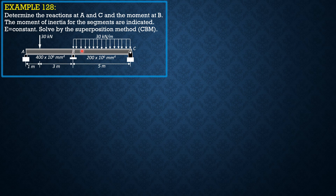We will remove support B so the beam deflects downward. Later we apply an upward force so it deflects upward, making the net deflection at B equal to zero, since there is no yielding of the supports. The moment of inertia for portion AB is 400 × 10⁶ and for BC is 200 × 10⁶. We denote 200 × 10⁶ as I, so in AB the moment of inertia is 2I.